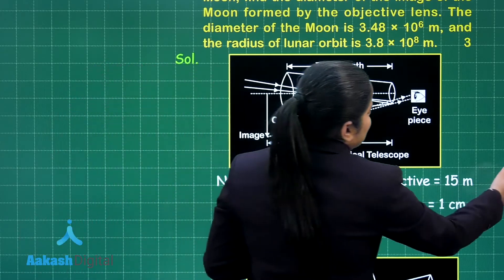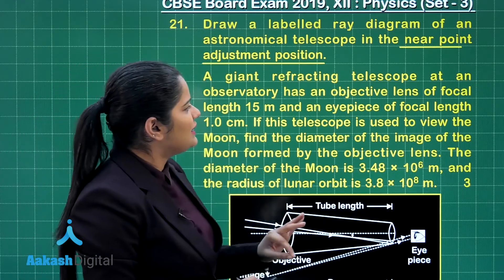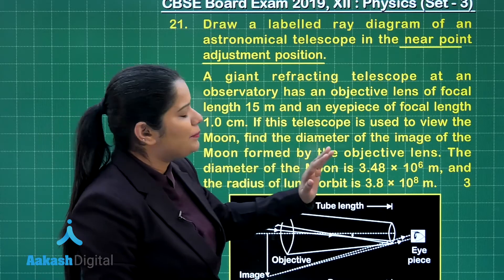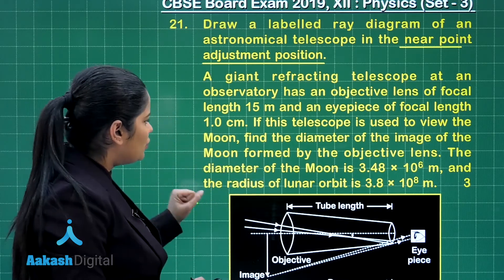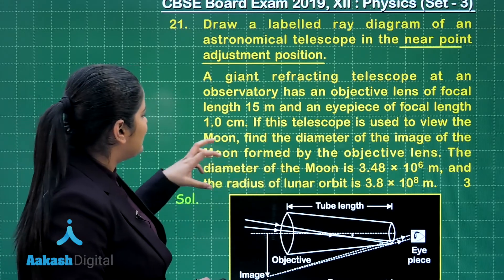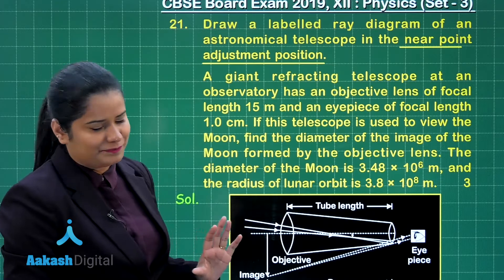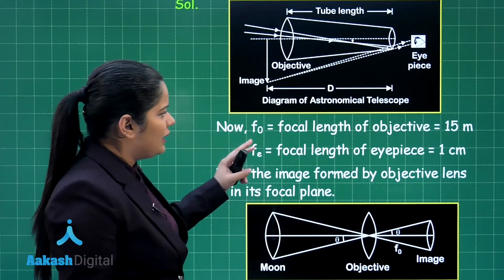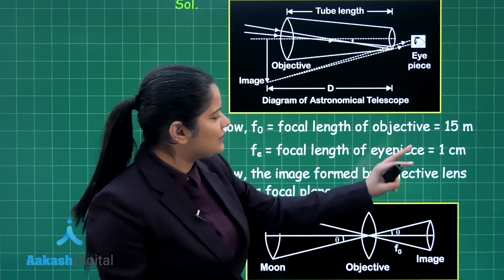Moving on to the numerical part of this question. This is a giant refracting telescope at an observatory that has an objective lens of focal length 15 meters and an eyepiece of focal length 1 centimeter. If this telescope is used to view the moon, find the diameter of the image of the moon formed by the objective lens. The diameter of the moon and the radius of the lunar orbit are given. The focal length of the objective lens is 15 meters and the focal length of the eyepiece is 1 centimeter.